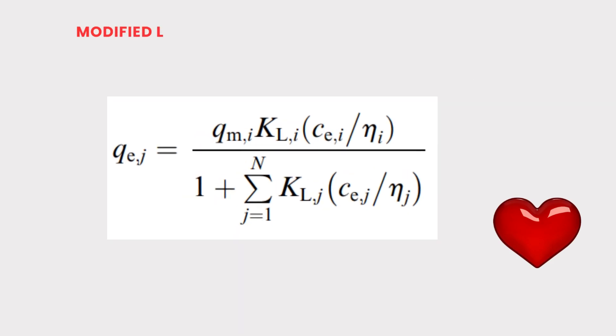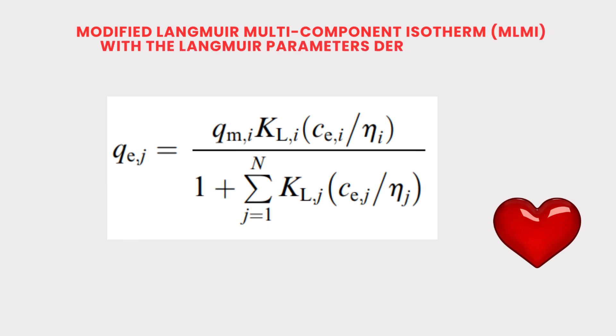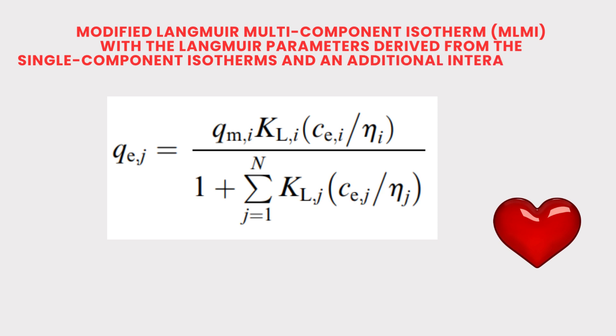Then comes modified Langmuir multi-component isotherm with the Langmuir parameters derived from single component isotherms and an additional term eta i and eta j has been added. Number of fitting parameters is eta i and eta j. The equation is qij equal to qmi times kli times ci divided by eta i, divided by 1 plus summation of klj times cej divided by eta j.